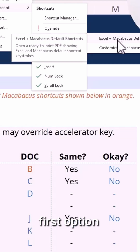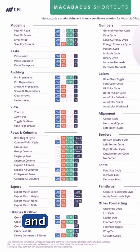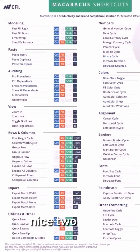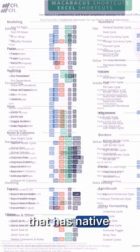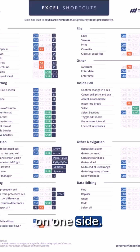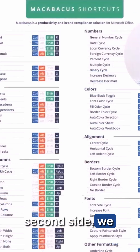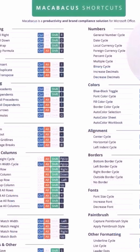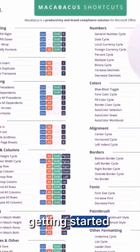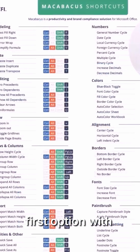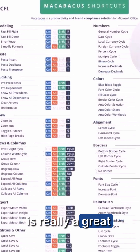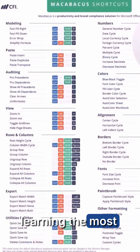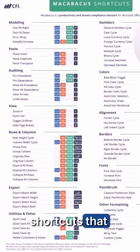If we click this first option — Excel and Macabacus default shortcuts — what we're going to get is a really nice two-page printable PDF that has native Excel shortcuts on one side, and then on the second side we have a list of the most common default Macabacus shortcuts. So if you're just getting started with the keyboard, this first option with the printable PDF is a great place to start. You can print this out, keep it right next to your workstation, and start learning the most common keyboard shortcuts that people use.